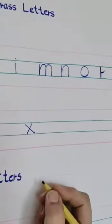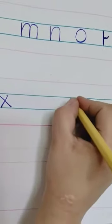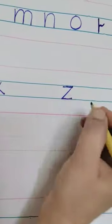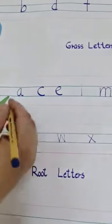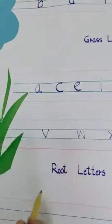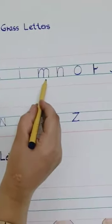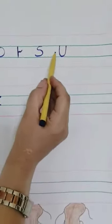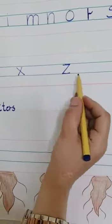Y is not a grass letter because it comes into the last three lines. Z is a grass letter because it also comes into the center two lines. Okay students, so let's see how many letters are in the grass. There are so many letters sitting on the grass — they are A, C, E, I, M, N, O, R, S, U, V, W, X, Z. Understand?